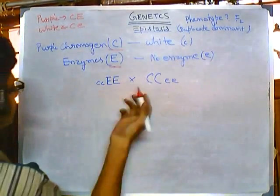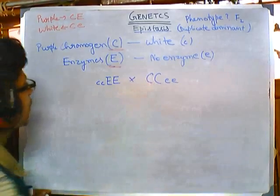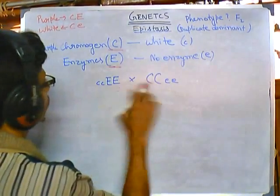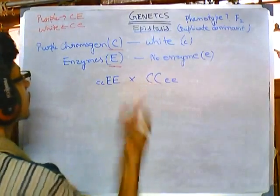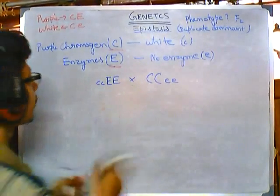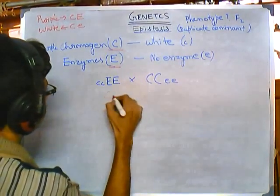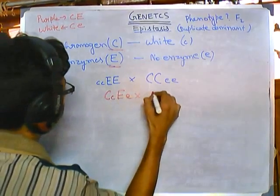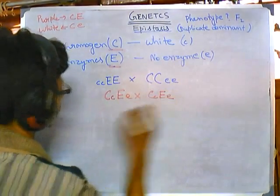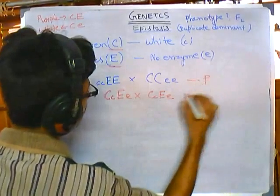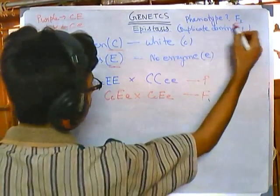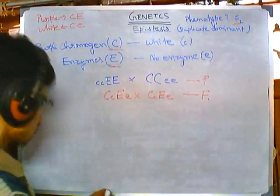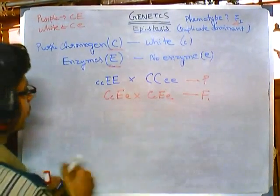Let's look at the cross again. The parental generation is small c small c crossed with small e small e — both homozygous recessive. In the F1 generation, all individuals will be heterozygous. This is the parental generation, this is F1, and we need the phenotypic ratio at F2 generation.